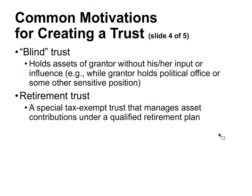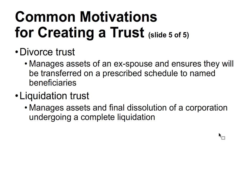A retirement trust is a special tax-exempt trust that manages assets of contributions under qualified retirement plans. A divorce trust manages assets of an ex-spouse and ensures they'll be transferred on a prescribed schedule — for example, a property settlement paid over a certain period of time. A liquidation trust manages assets during the final dissolution of a corporation undergoing a complete liquidation, since a business might liquidate over a plan spanning several years.